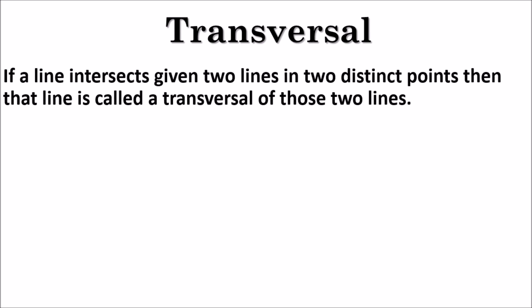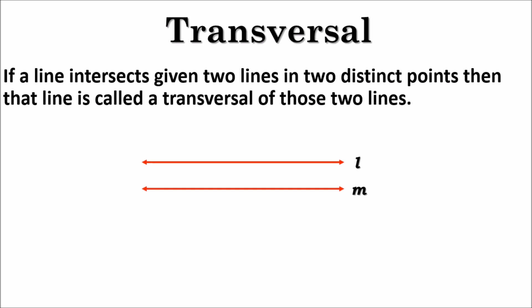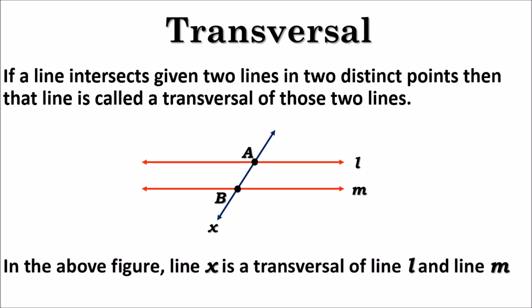What is a transversal? If a line intersects two given lines at two distinct points, then that line is called a transversal of those two lines. For example, here we have line L and line M, and you can see that both lines are intersected by a third line X. Line X intersects line L and line M at points A and B respectively. Therefore, line X is a transversal of line L and line M.